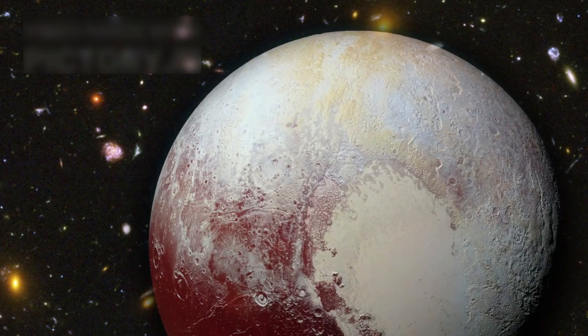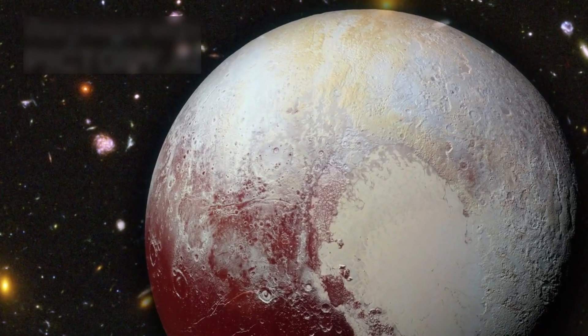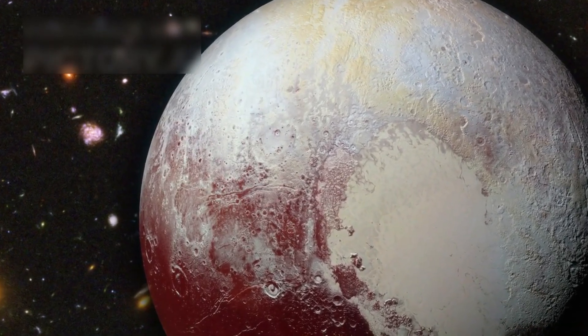Its orbit also tilts at 17 degrees, setting it apart from planets that move in the flat disk plane of the solar picture. Pluto travels at an angle, making its path unusual in the celestial scene, unpredictable and rare.